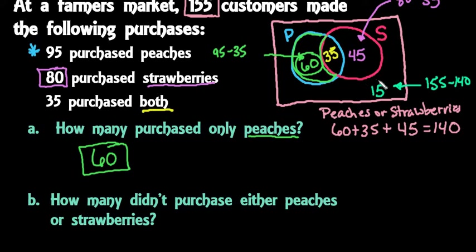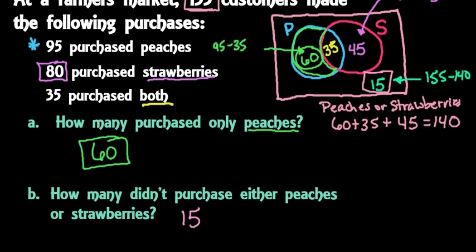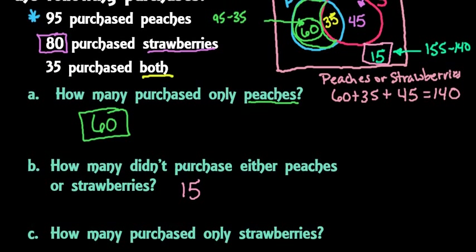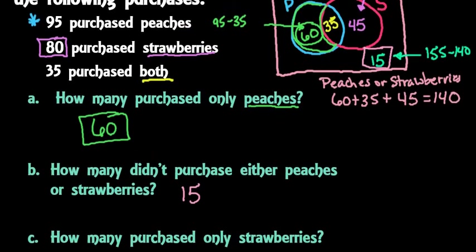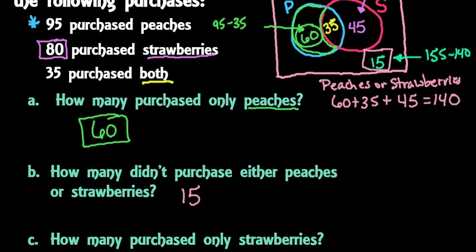The next question asks how many didn't purchase either peaches or strawberries — that's the outside part of the rectangle, so 15 didn't purchase either. The last question asks how many purchased only strawberries — that's the outer part of the strawberries circle, not the overlap — so 45 purchased just strawberries.